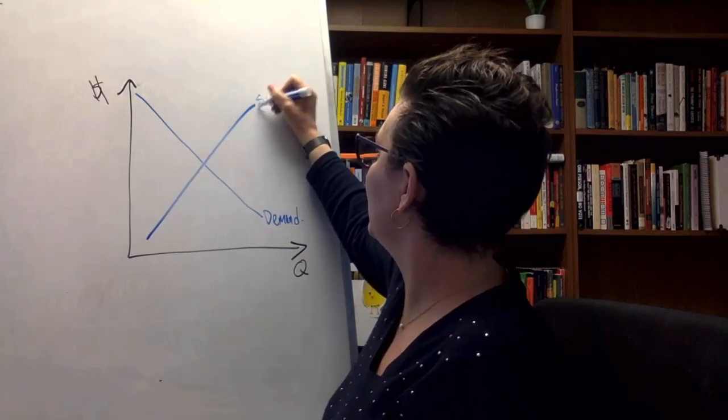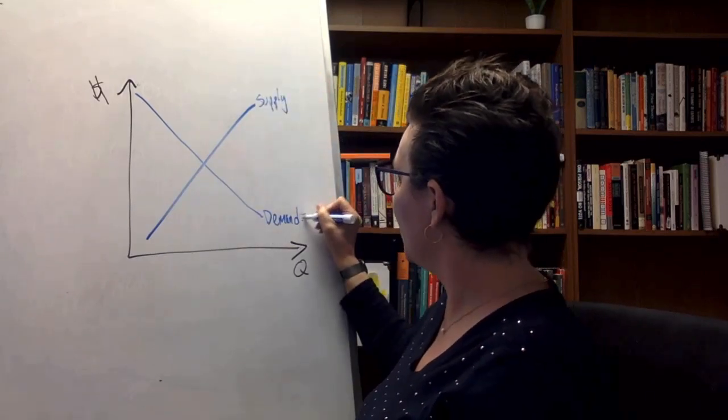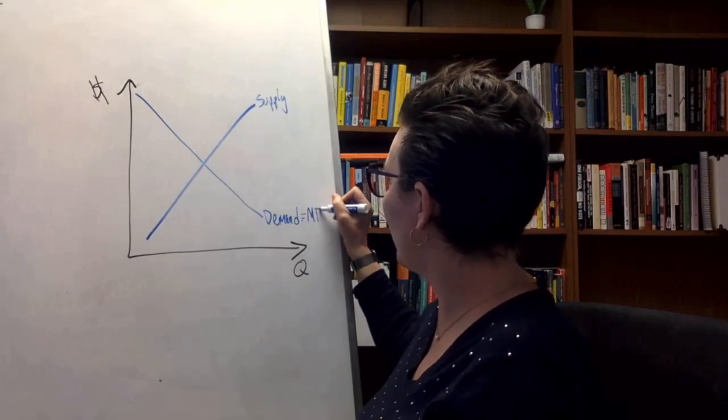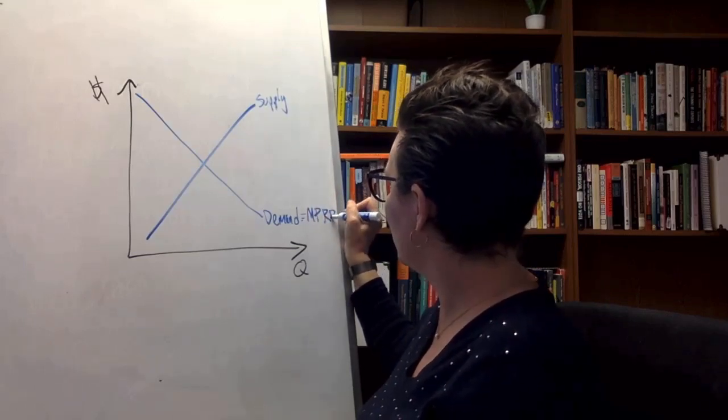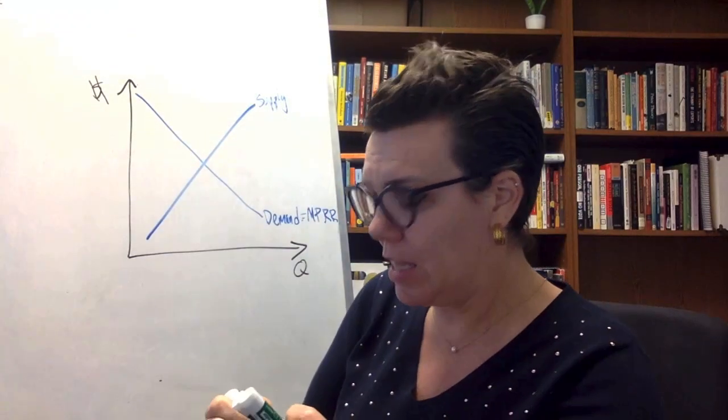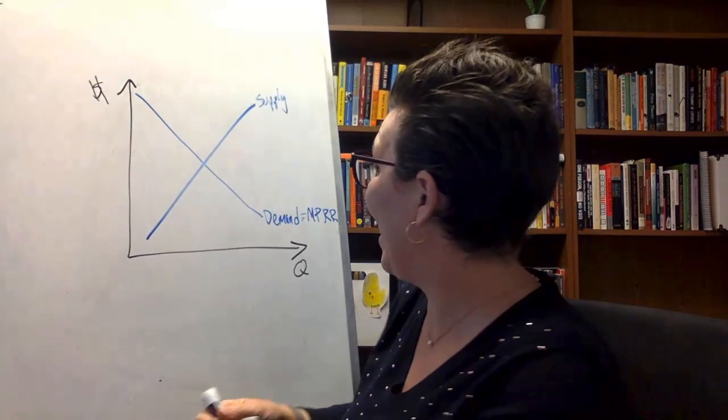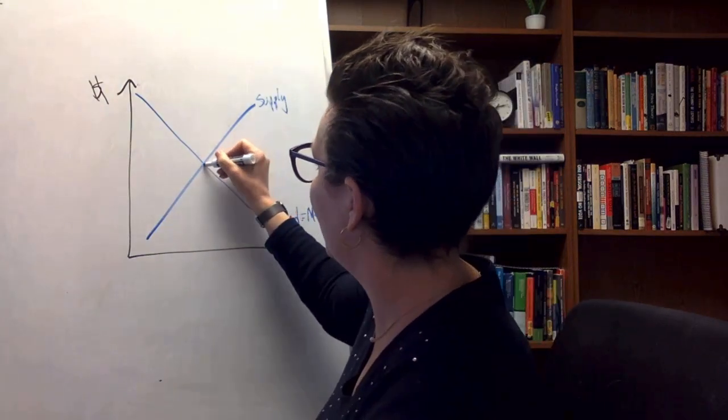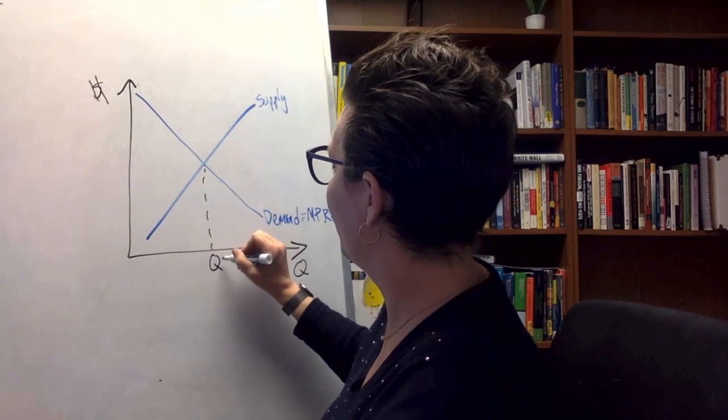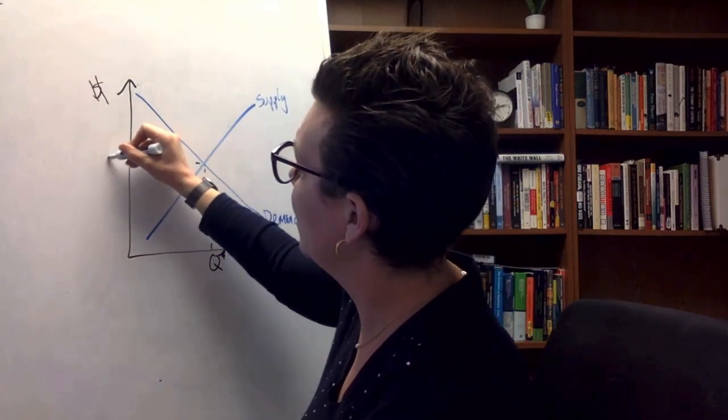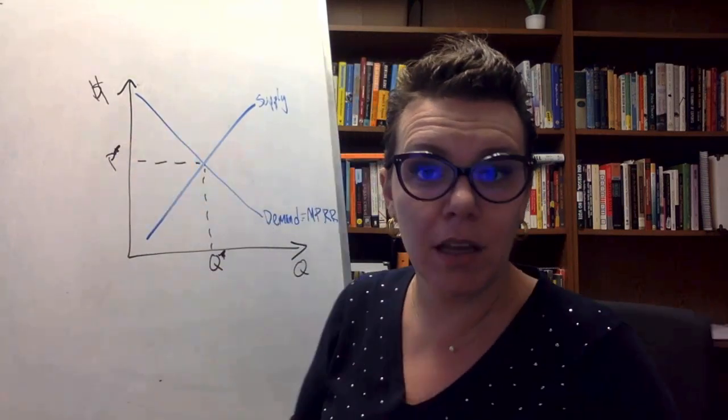And if signaling theory prevails, that's it. Demand equals the marginal private rate of return of education. And the market's going to allocate education efficiently because the returns will be reflected in the private benefits.